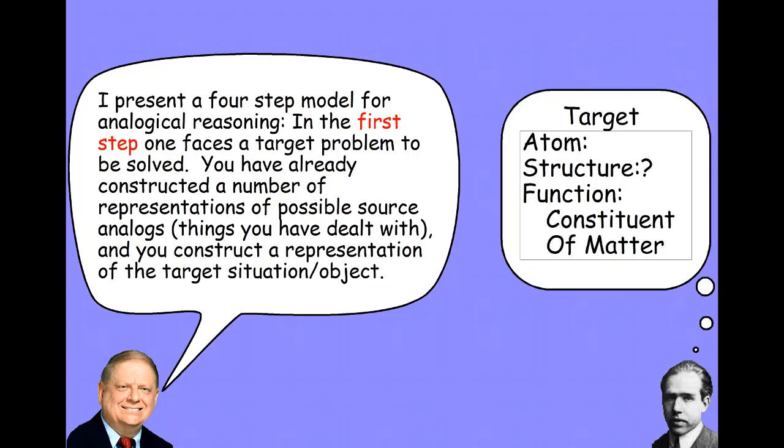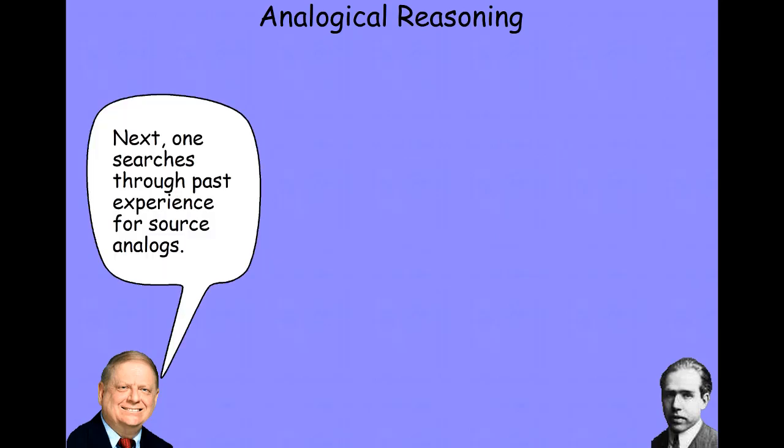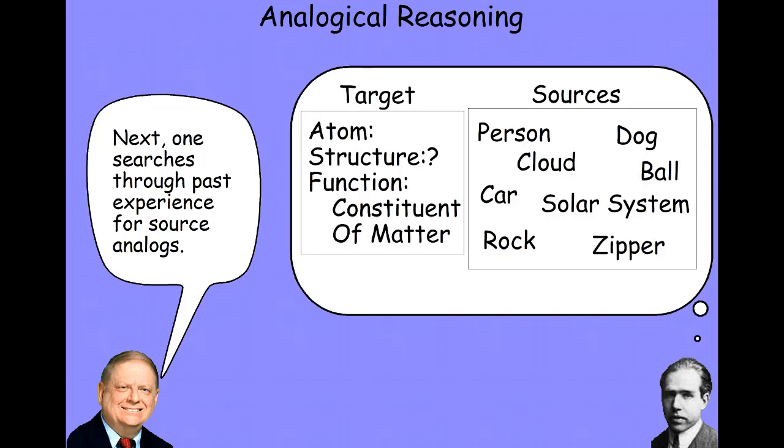Bohr starts off thinking, look, I'm trying to discover the structure of the atom. I know that this function is constituent of matter. I know certain facts about the properties of the elements that make up an atom. And what I want to do now is try and figure out a way to think about how to theorize about its structure. So, you search through your past experience for source analogs. You say to yourself, okay, what about people? Well, atoms aren't really anything like people. Dogs? No, not much. Clouds? Well, later, that will be a source analog. A solar system, though. A solar system might work.